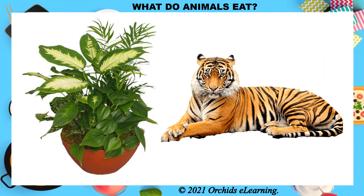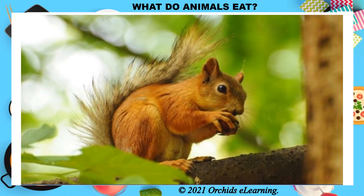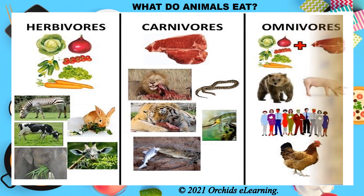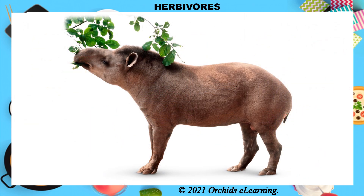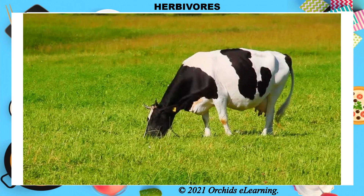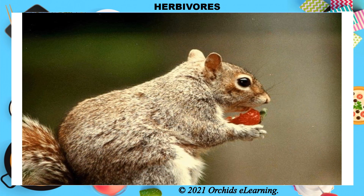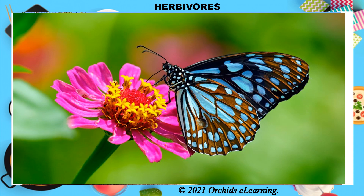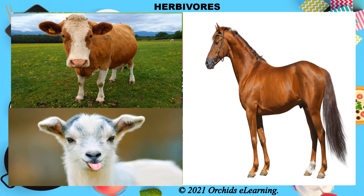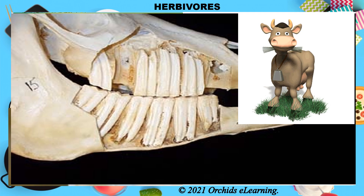Unlike green plants, animals cannot make their own food; they depend on plants or other animals for food. Based on their feeding habits, animals can be divided into three groups: herbivores, carnivores, and omnivores. Herbivorous animals or herbivores eat only plants and plant products. Cows, deer, horses, giraffes, squirrels, and butterflies are examples of herbivores. Herbivores such as cow, horse, and goat have wide, blunt teeth suitable for pulling plants off the ground and grinding them.